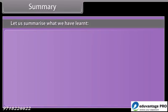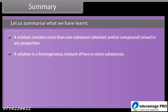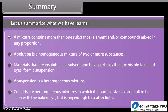Summary: A mixture contains more than one substance — element or compound — mixed in any proportion. A solution is a homogeneous mixture of two or more substances. Materials that are insoluble in a solvent and have particles visible to the naked eye form a suspension, which is a heterogeneous mixture. Colloids are heterogeneous mixtures in which the particle size is too small to be seen with the naked eye but large enough to scatter light.